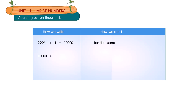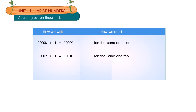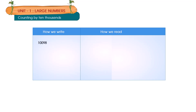10,000 plus 1 is equal to 10,001. 10,001 plus 1 is equal to 10,002. 10,008 plus 1 is equal to 10,009. 10,009 plus 1 is equal to 10,010. 10,010 plus 1 is equal to 10,011. 10,098 plus 1 is equal to 10,099. 10,099 plus 1 is equal to 10,100.